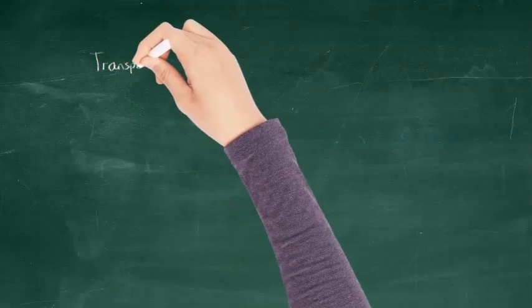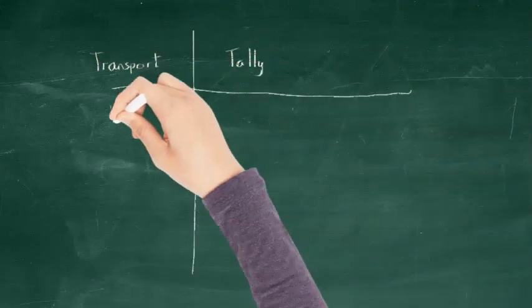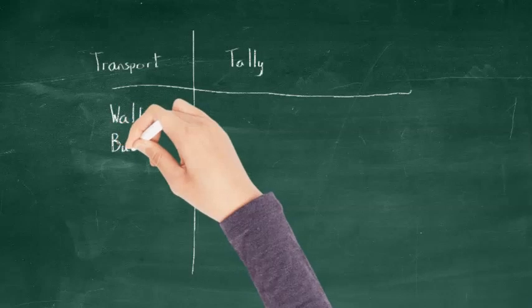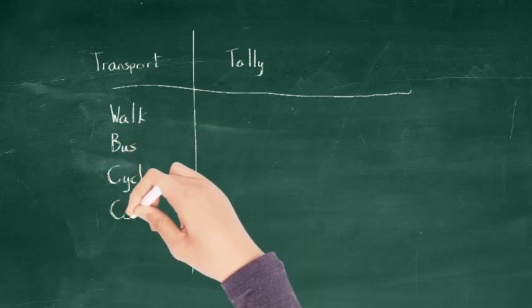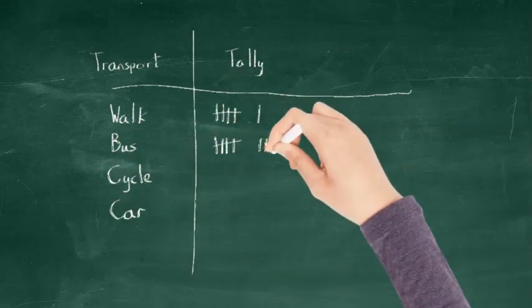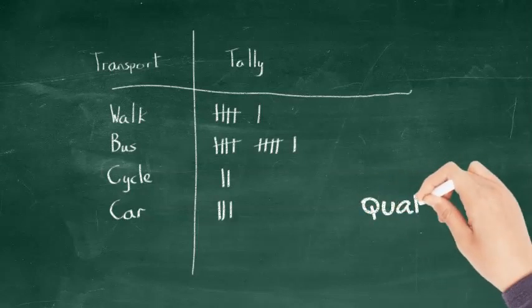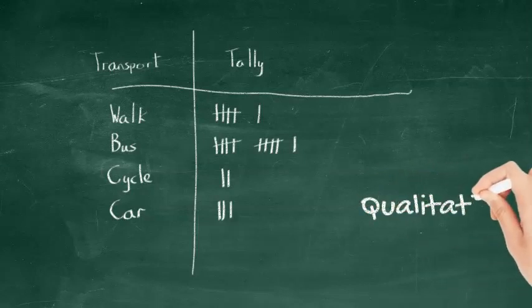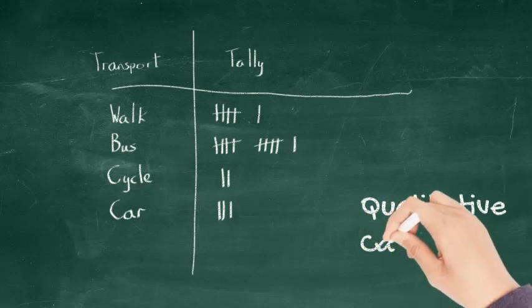When you were at primary school, the teacher might have asked about how you got to school this morning. You would have drawn a tally chart like this. You have a column which describes the different methods of transport. Then you have a column where you tally up the number of pupils who traveled that way.